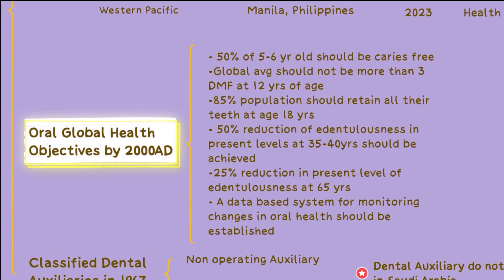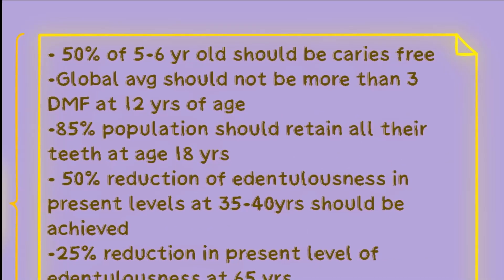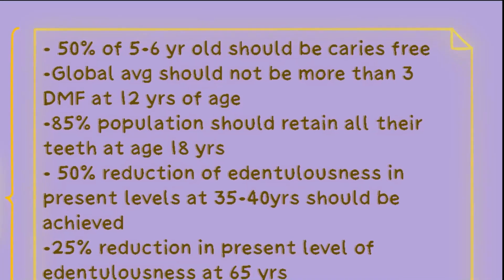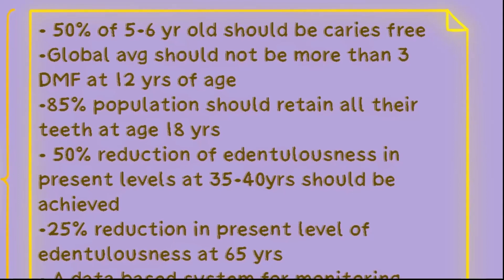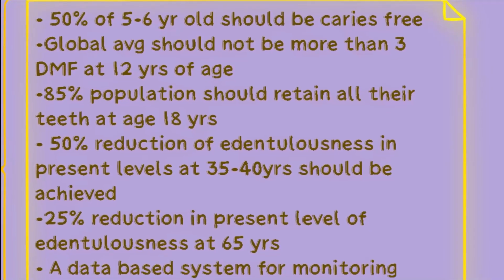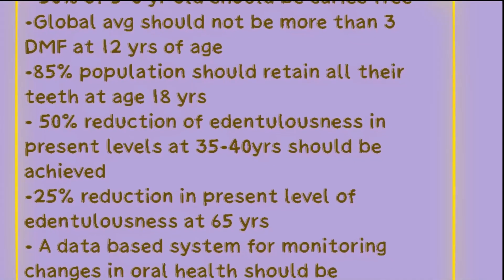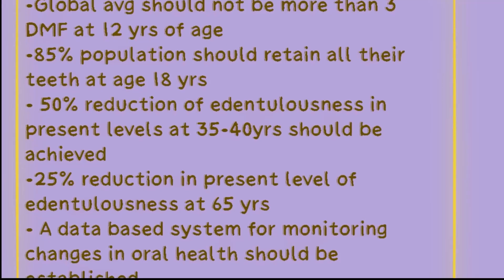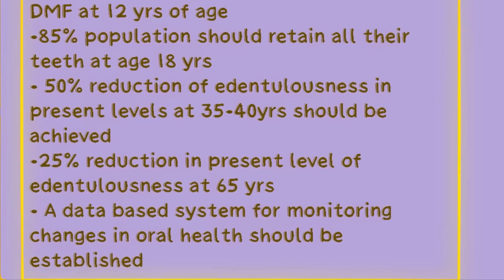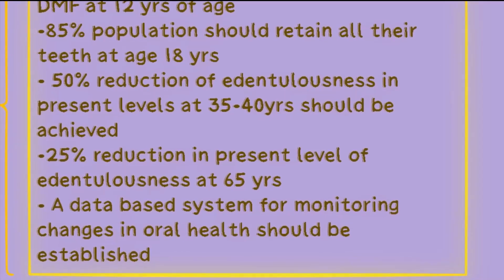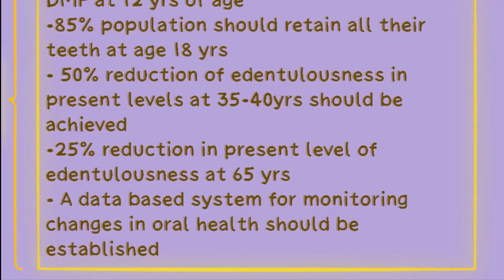In the early 2000s, WHO had set specific global health objectives. By the year 2000, they aimed to achieve: at least 50% of 5–6 year old children should be caries free; the global average of decayed, missing, or filled teeth at age 12 should not be more than 3; 85% of the population should retain all their teeth at age 18; a 50% reduction of edentulousness in the 35–40 age group; and a 25% reduction in edentulousness at 65 years. Additionally, WHO planned to establish a data-based system to monitor changes in oral health.